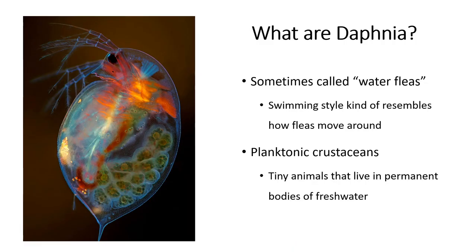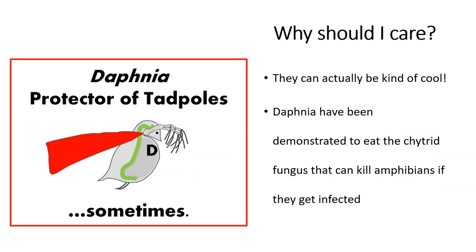So moving on to daphnia. Sometimes these are called water fleas because the swimming style kind of resembles how fleas move around. It's a very jagged sort of jaunty swimming style. They are planktonic crustaceans. Crustaceans include things like lobsters, crabs, that kind of thing. So these little daphnia are in that general group. And these tiny little animals that live in permanent bodies of water, like lakes.